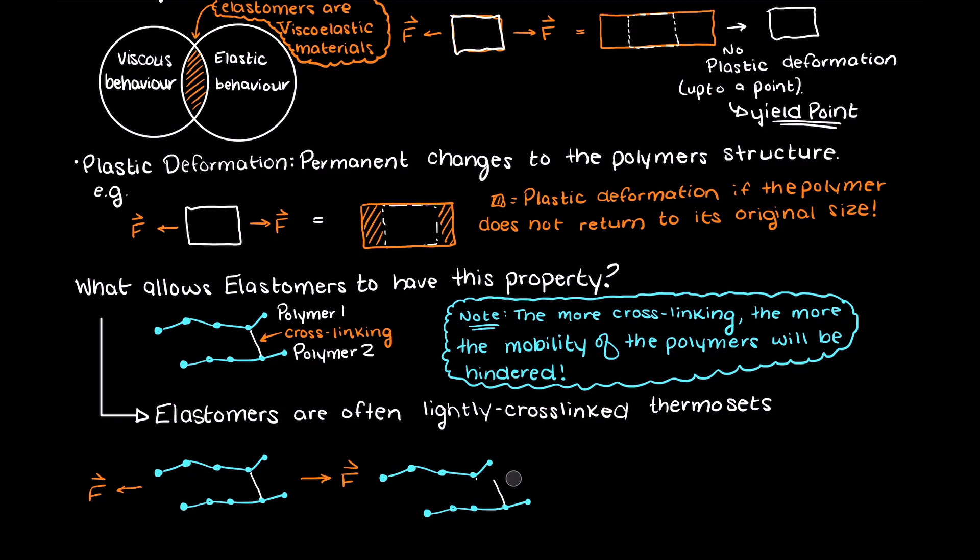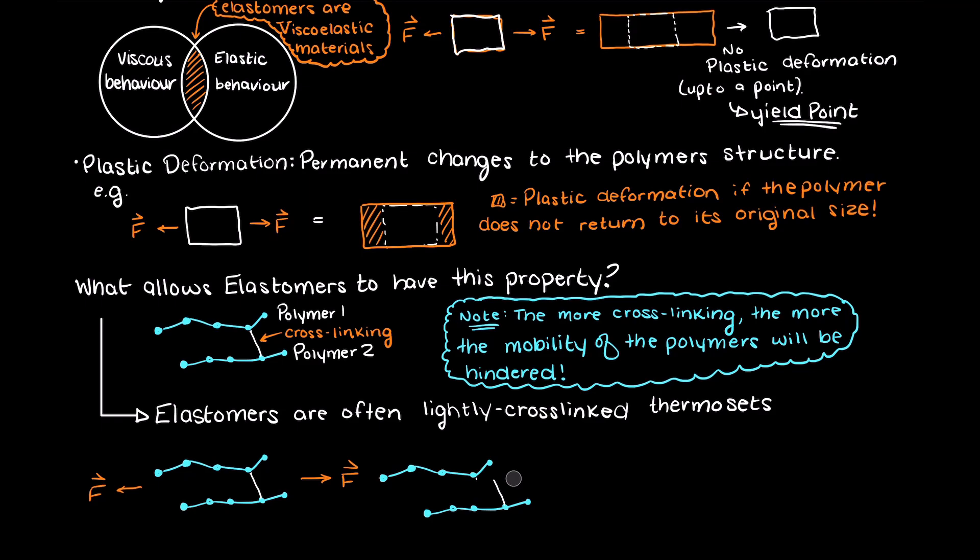Elastomers are often thermoset polymers with a minimal amount of crosslinking, which allows the polymers to stretch but retain their structure. I should note that there are a few examples of thermoplastic elastomers, but these are fairly limited and as a whole elastomers are largely thermosets.